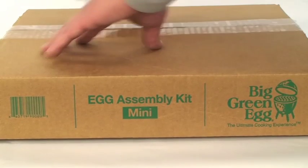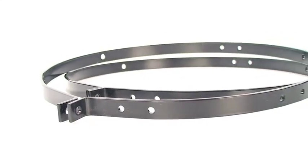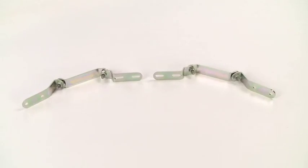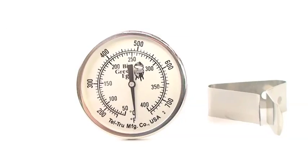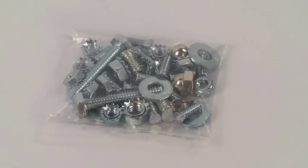Next, unpack the components from the box labeled EK kit. This box contains the metal bands, rear and side hinge assemblies, dual function metal top, temperature gauge, cast iron fire grate, stainless steel cooking grid, and the necessary bolts and hardware.